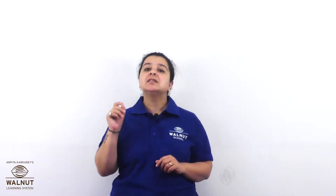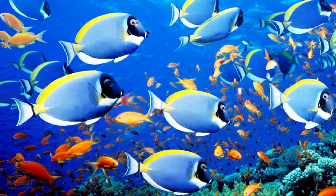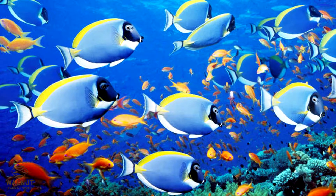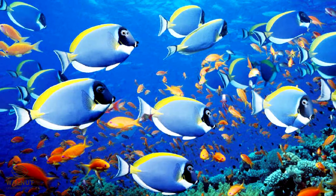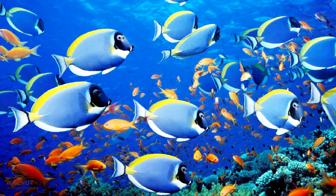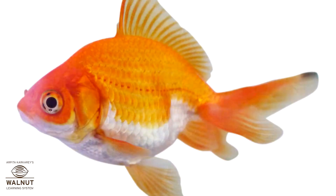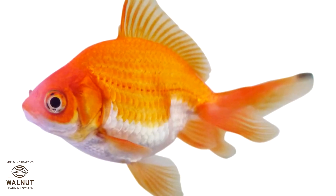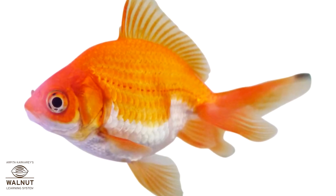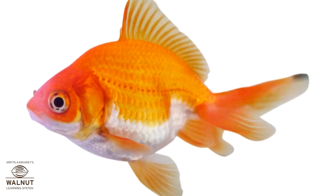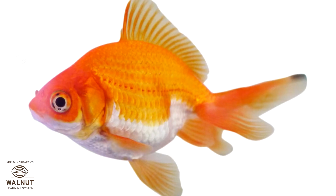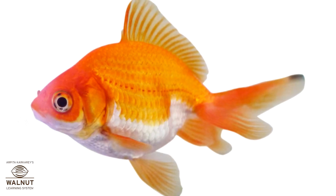The third group is the swimmers. This group has all the fish. They live in water. They have fins. They have scales on their body. We cannot see their ears.